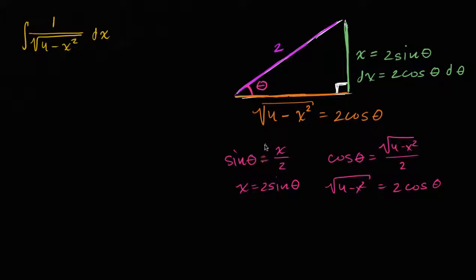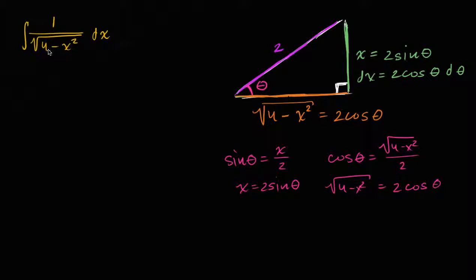We were able to do this by drawing a right triangle and using the SOHCAHTOA definition of trig functions. You could also use the unit circle or the Pythagorean identity — if x is two sine theta, the Pythagorean identity confirms this entire expression simplifies to two cosine theta.